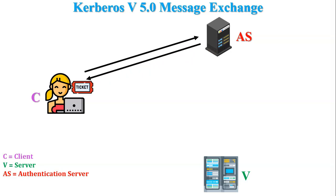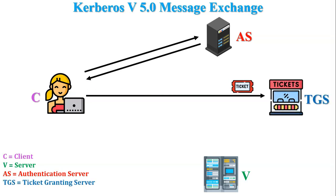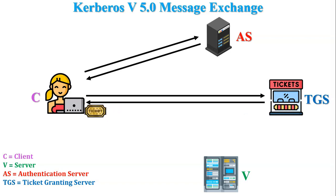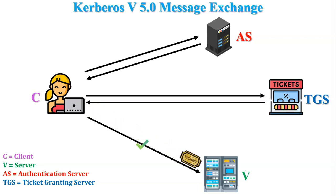The client will accept and store that ticket. That ticket, which is received by the client, is used to access the ticket granting server. So the client sends this ticket to the ticket granting server and also sends a request for a ticket to access server V. The ticket granting server accepts the client ticket, generates a new ticket for server V and sends it to the client. The client accepts and stores that ticket. After that, the client sends this ticket to server V, and server V accepts the ticket and a connection is established between the server and client.